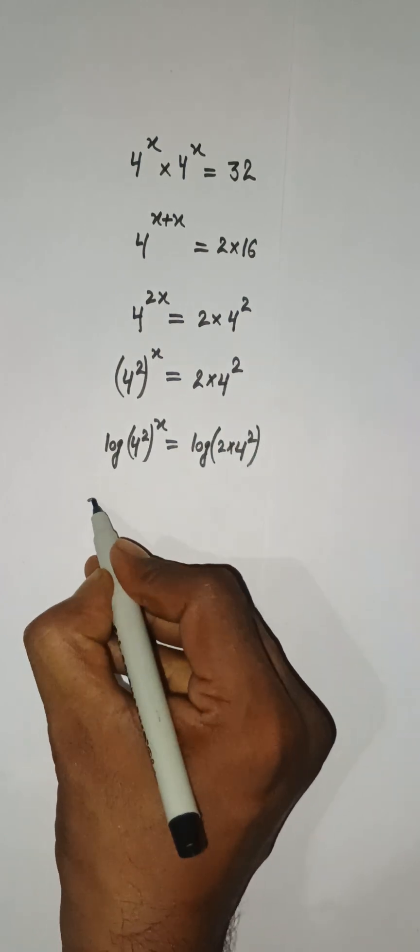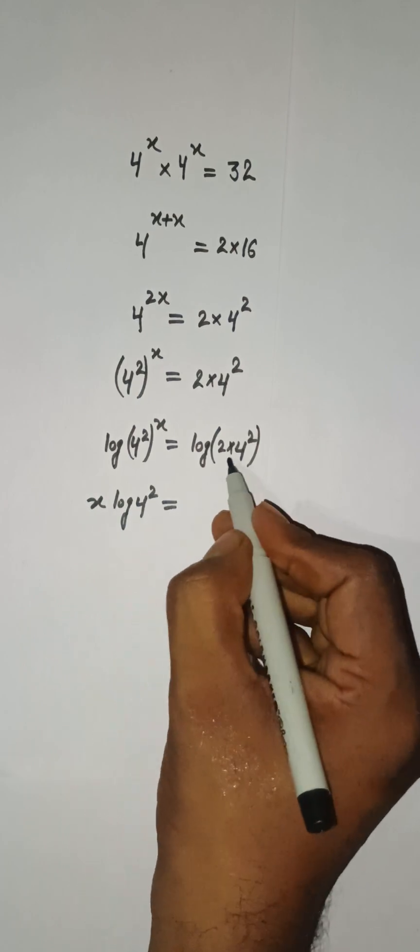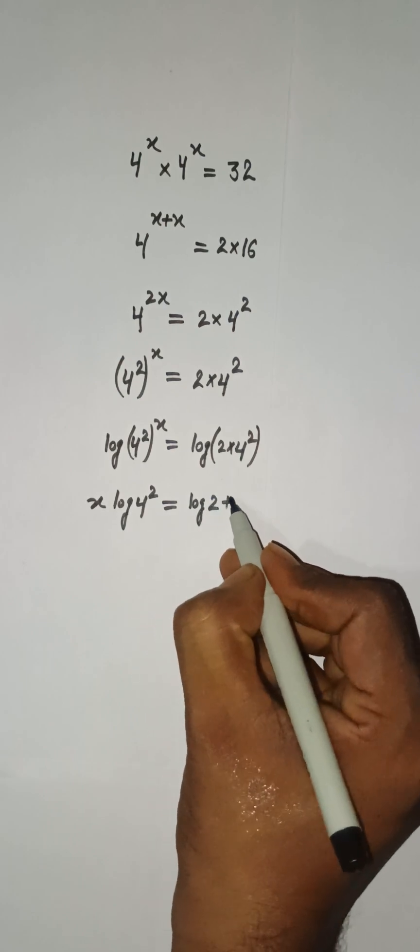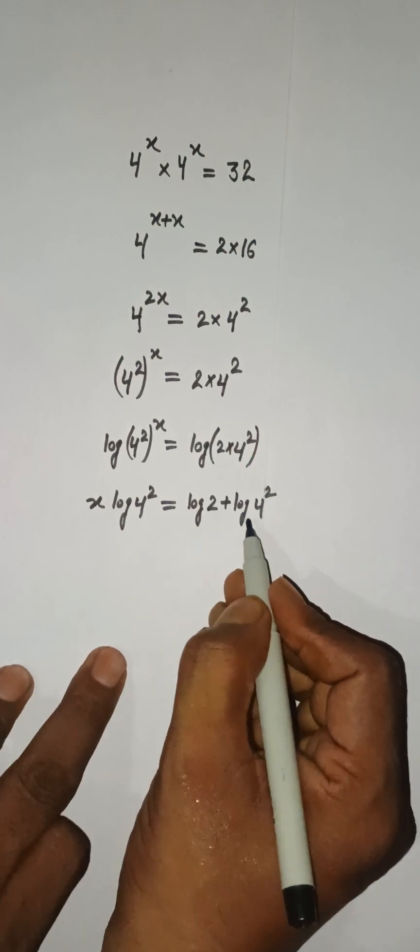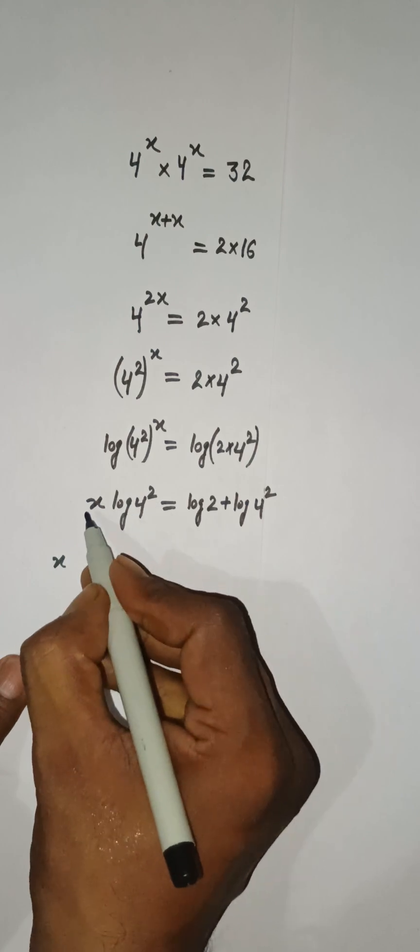So this x will come in front of log, 4 squared. And here we have log 2 plus log 4 squared and I can write here x, this 2 will come here.